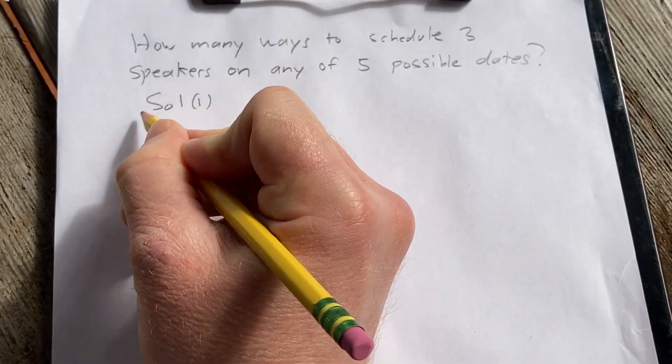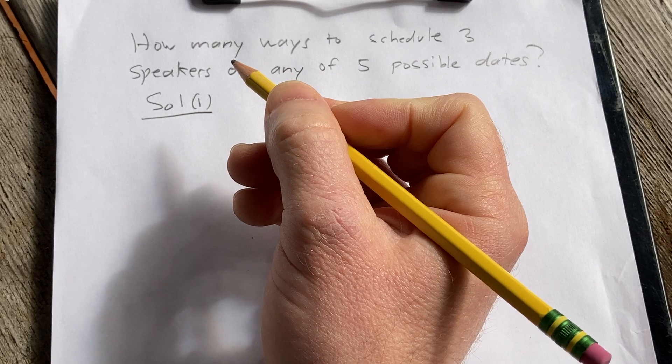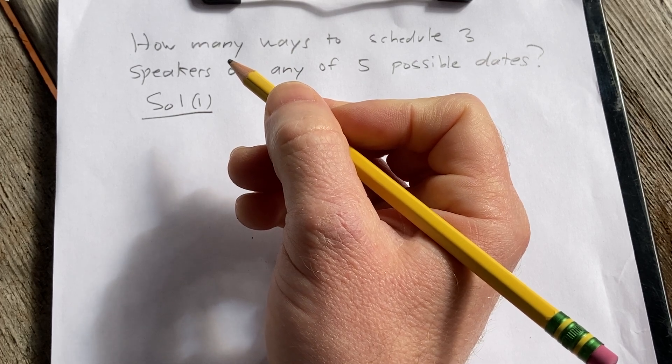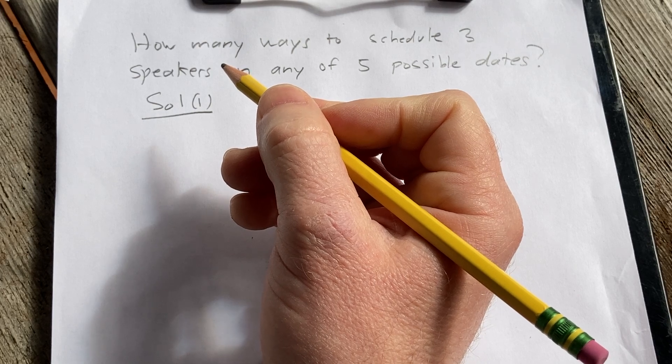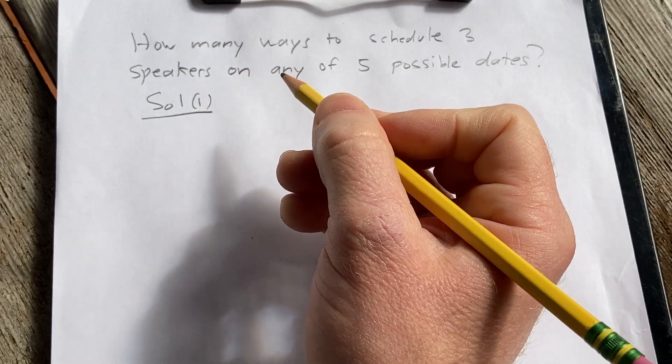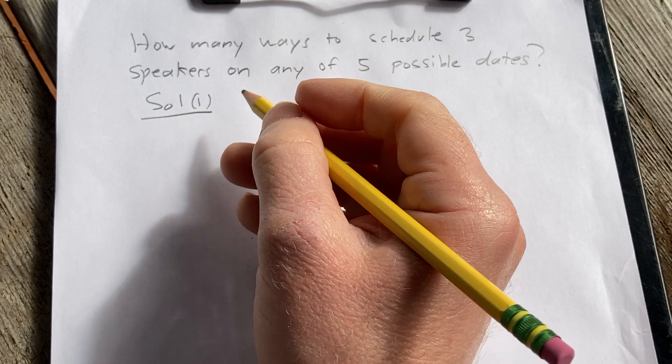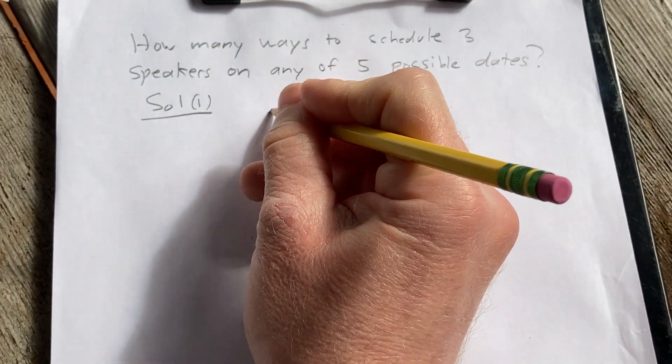So solution one. For solution one we're going to use the multiplication rule. So we have five possible dates and we have three speakers to schedule. So we have to think about the speakers.